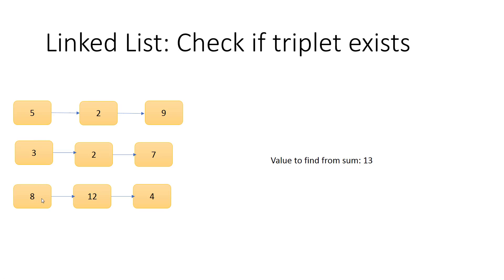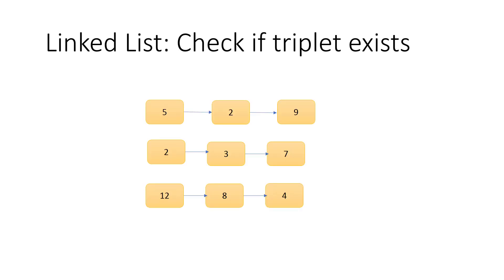The logic is: sort the second linked list in ascending order and sort the third linked list in descending order, keeping the first linked list as it is. Then pick one item from each of the three lists and add them.